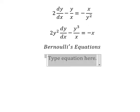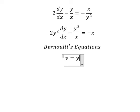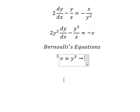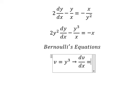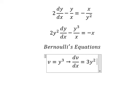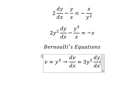So we let v equal to y to the power of 3. Then we need to find the first derivative of both sides, and we have dv over dx equal to 3y squared dy over dx. Because we don't have the number 3 in the equation, we divide both sides by 3.